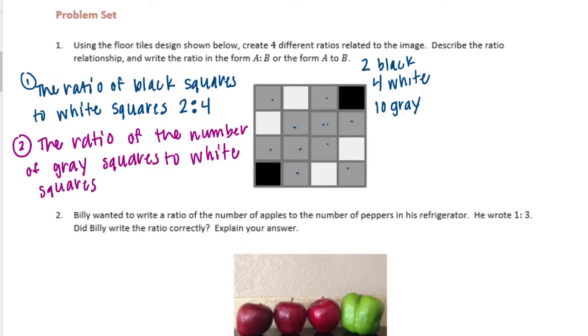Remember, it has to go in order of the sentence. So the gray squares need to go first, which would be ten, to the white squares would be four, ten to four. So there's a second one.